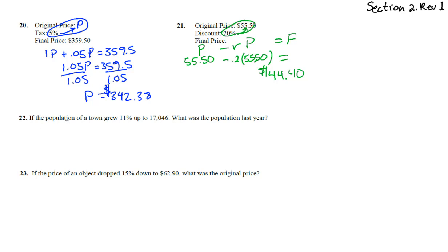Number 22. The population of a town grew 11% up to 17,046. What was the population last year? So there's our variable, P. So the population of a town grew 11%, but 11% of that original population, just like we always take the percent times that original. Same thing here. 11% of the population plus population equals 17,046. Combine these together and you get 1.11P equals 17,046. And divide by 1.11.